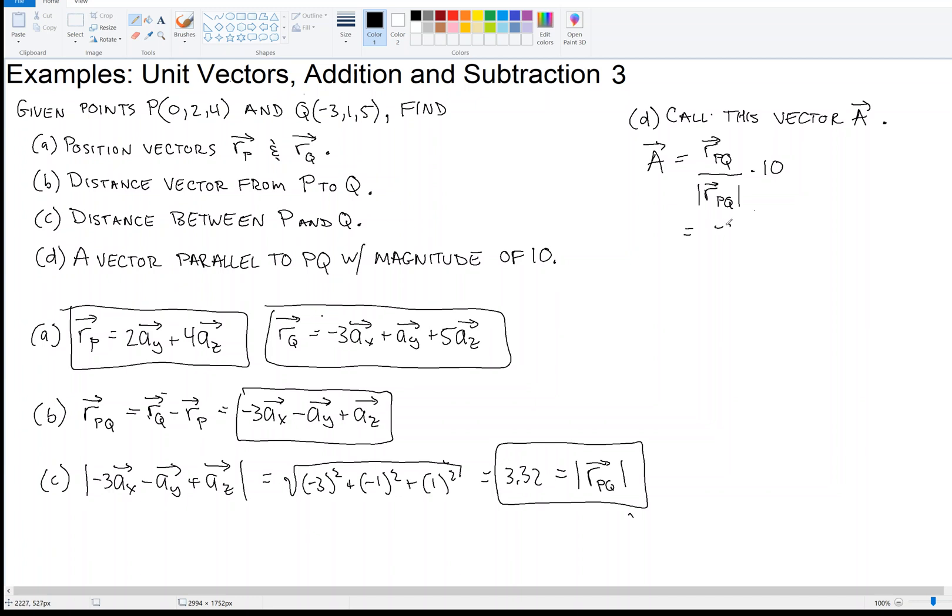So this would be negative 30 AX, right? 10 times negative 3. And then we have minus 10 times 1, so 10 times, so we have 10 AY there, minus 10 AY. And then we have 10 times 1 AZ, so plus 10 AZ.